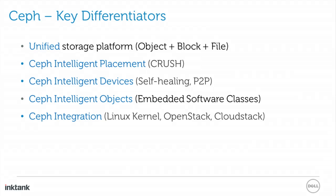The key differentiators around Ceph, other than the unified aspect — which means you only have to deploy one system — include a very clever way of distributing data using an algorithm called CRUSH. When clients write data to storage nodes, they use this algorithm to calculate where data should be put and read from. This is very efficient and gives Ceph a huge part of its scale story. When you've got thousands of nodes, having a fast way to work out where data should go without an index lookup is core to that scale.